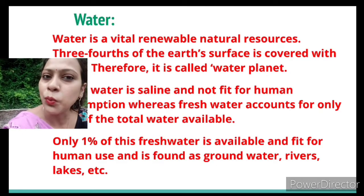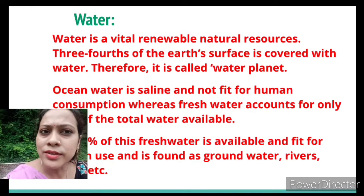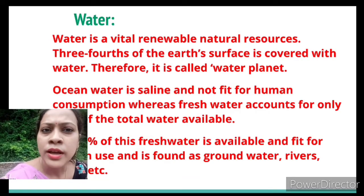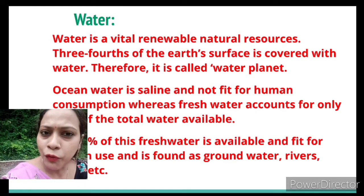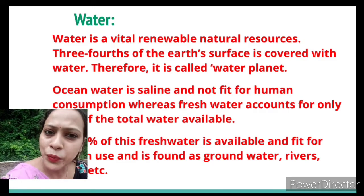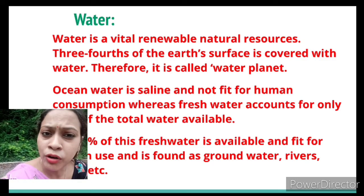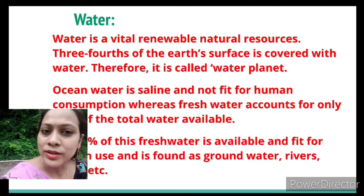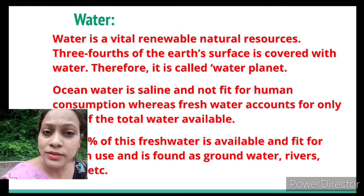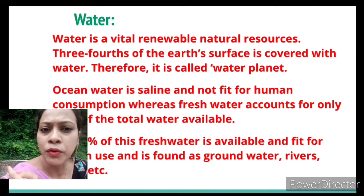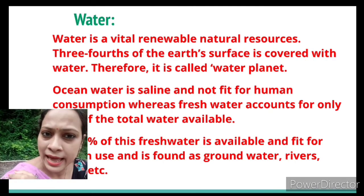Now we move on to water resources. Water is a vital renewable natural resource and three-fourths of the earth's surface is covered with water, which is why Earth is known as the water planet. Only one-fourth of the area is land; the rest three-fourths is water.